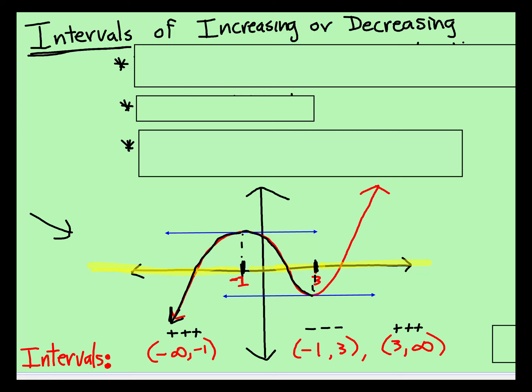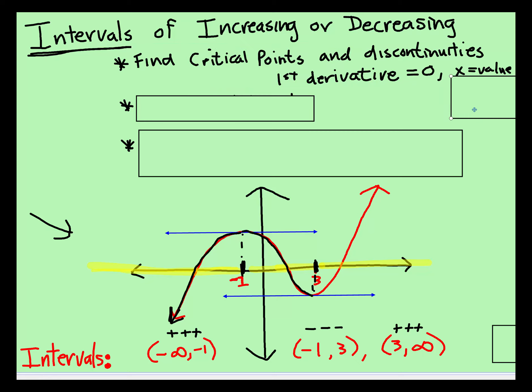So there is a method by which you do that. You find the critical points by taking the first derivative, setting it equal to zero to find the x values. But you also have to find discontinuities because if it's a rational function, there's going to be discontinuities and that impacts what the graph looks like.